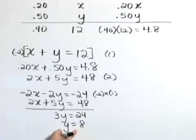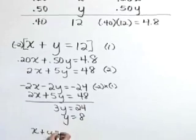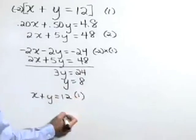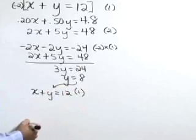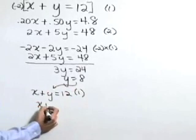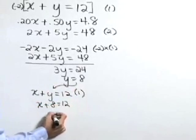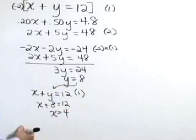Let's also solve for X. I'm going to do that in equation 1 which reads X plus Y is equal to 12, substituting 8 in for Y. X plus 8 is 12 or X is equal to 4.